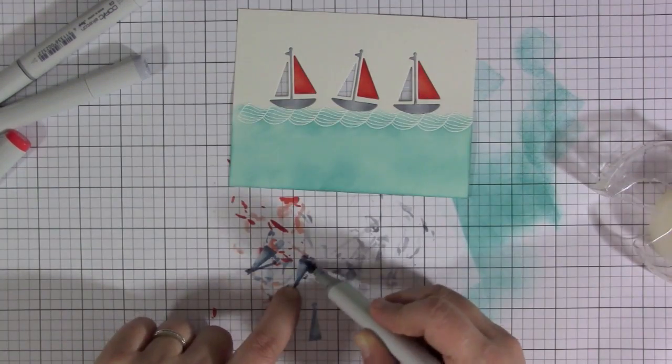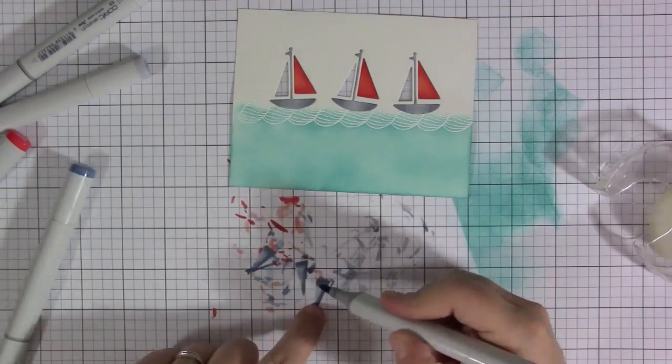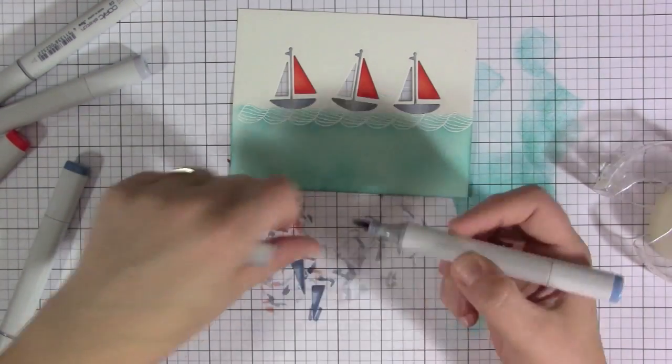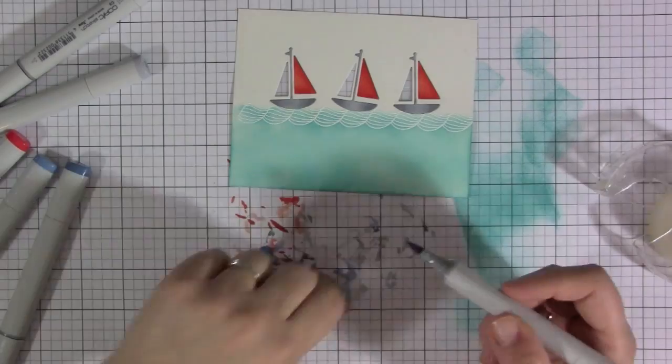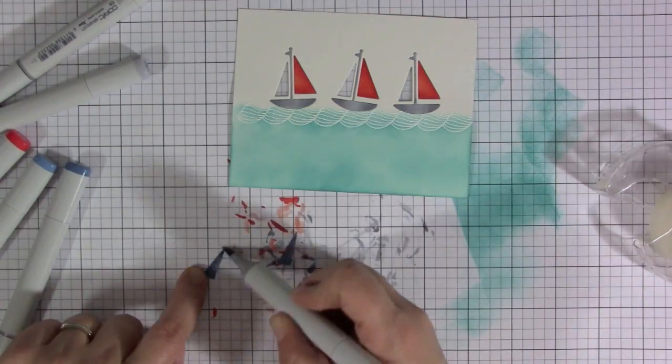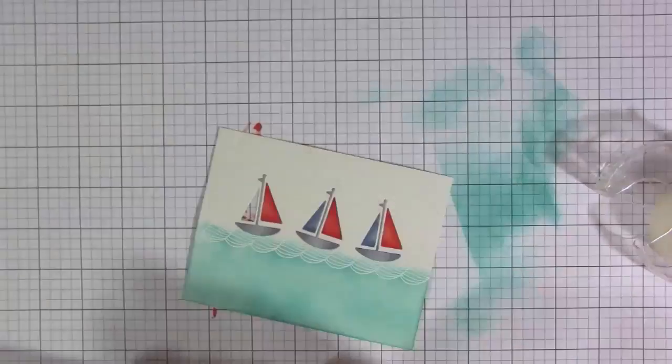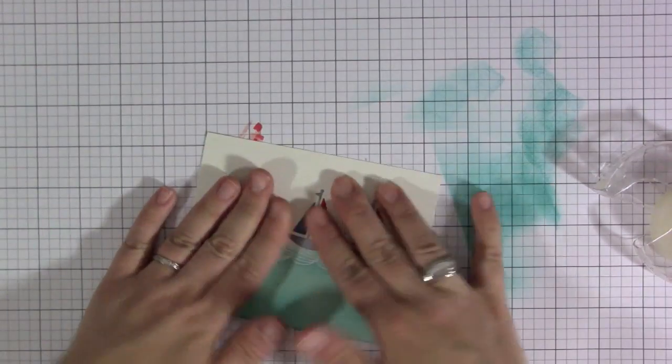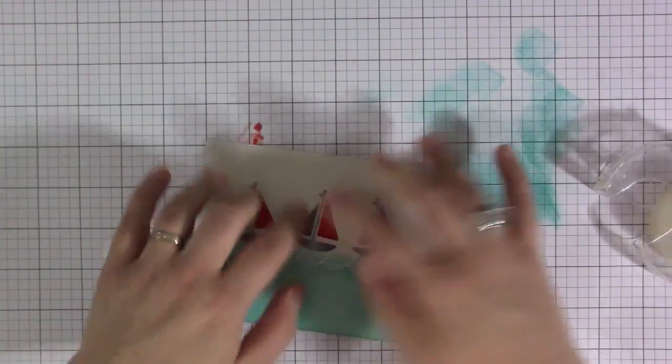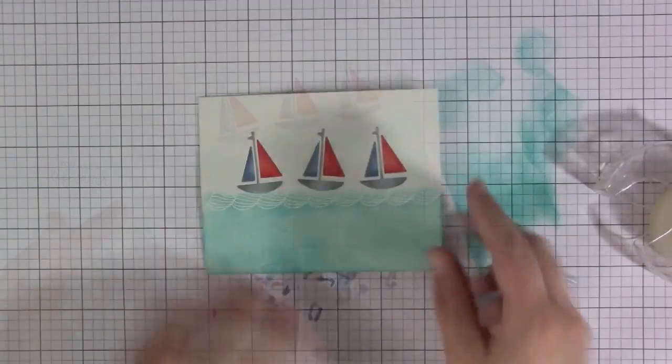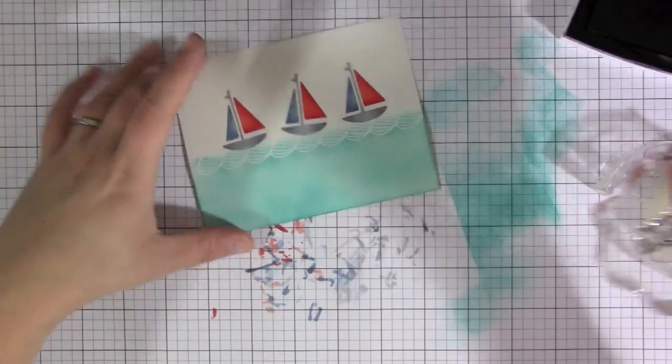Now you can see there I put the red sails in and I'm going ahead and doing the blue sails. Same process as before, just three colors, lightest color first and then adding my darker color and then the medium color to help blend everything out. Then I'm just going to place all those right into the opening so that all my sailboats are complete.